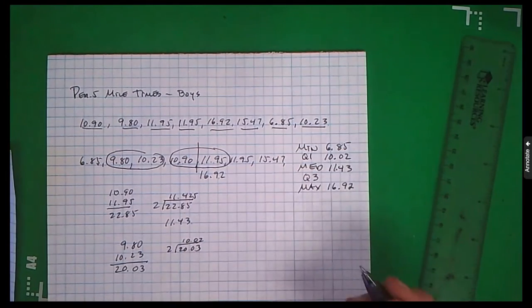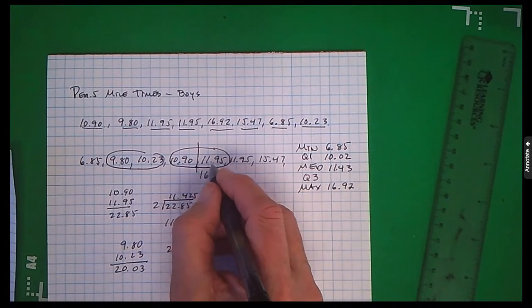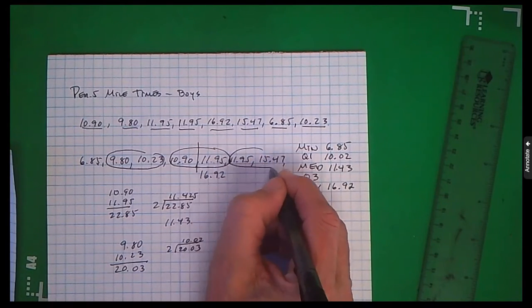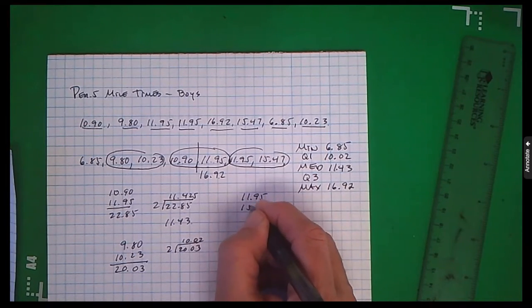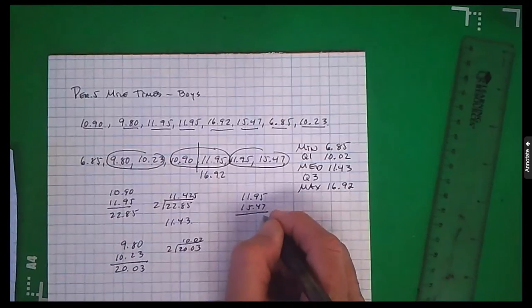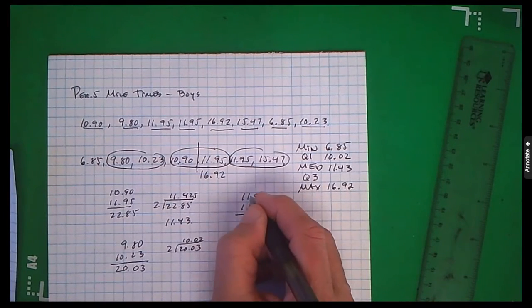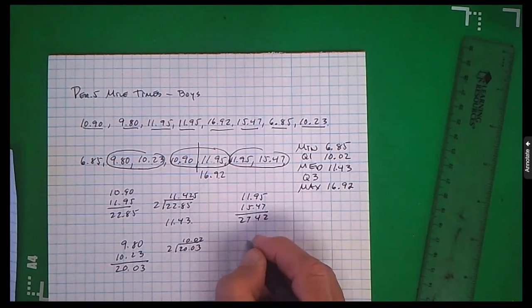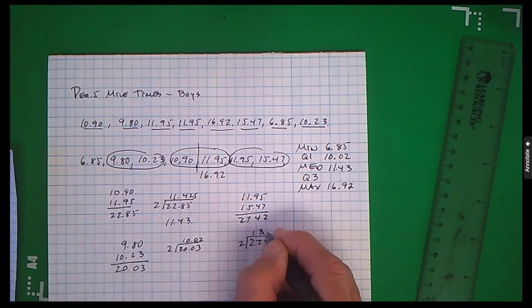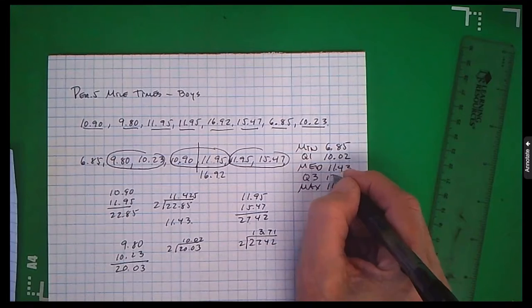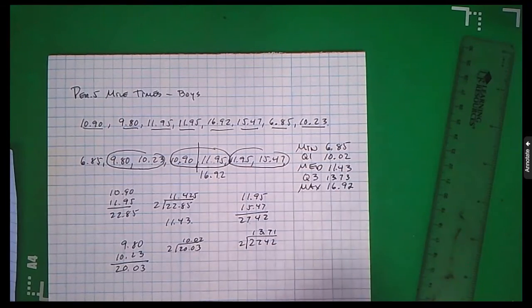When I look for the middle of the top data, I see I have two in the middle again. I'm going to add them. Divide by two. Take half of that. And there's my third quartile.